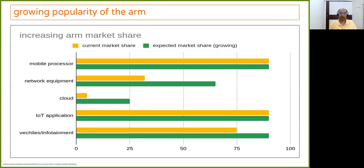ARM market share is growing. In mobile and IoT it is already the market leader, and those industries are expanding. In network equipment, cloud, and vehicle infotainment, significant growth is expected in ARM market share in upcoming years. On cloud, especially HPC applications, there is huge potential for ARM processors, and almost all software is now getting ported and tuned for ARM.